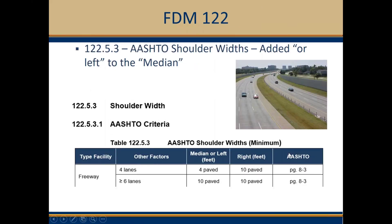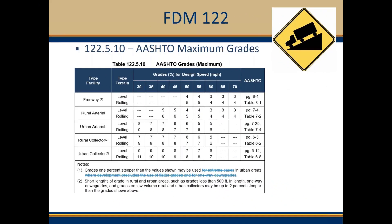A minor edit was added to section 122.5.3. To be consistent with other sections of the FDM, the AASHTO table was updated to reflect that it can be median or left, as updated in table 122.5.3. Section 122.5.10 was updated to reflect changes in the 2011 AASHTO Green Book, specifically in the freeways chapter. Table 8.1 was updated to reflect that grades 1% steeper than the value shown may be used in urban areas. The term 'extreme cases' and 'where development precludes the use of flatter grades' were removed as subjective language.